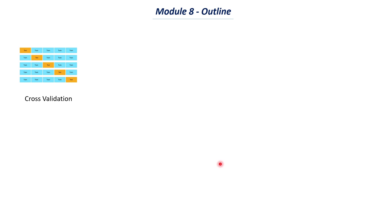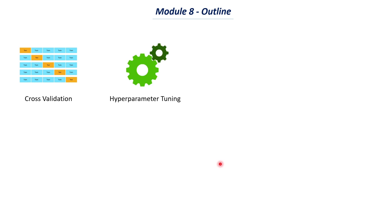The first video will be on cross validation. Once we understand cross validation, we will also be discussing something called stratified cross validation and how to implement it in Python. The next topic will be on hyperparameter tuning, which is one of the most important things we have to do while implementing a machine learning model.